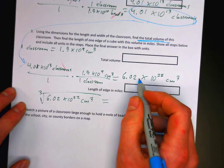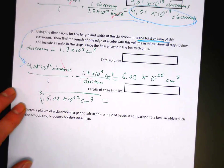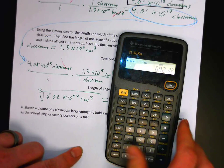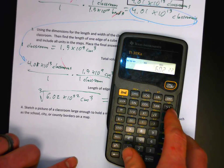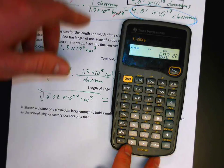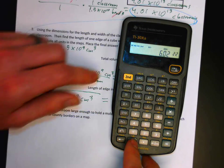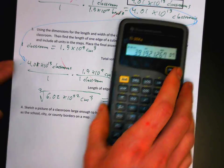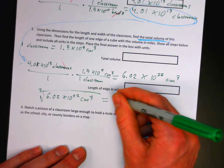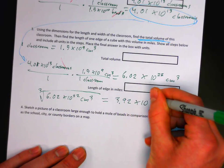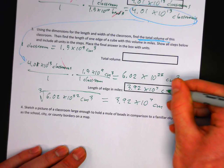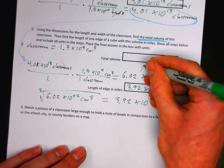So we take the cube root of this number. You might need to look for that button on your calculator — on my calculator you press the second key and use this button, or there's a designated cube root key. The cube root of 6.02 times 10 to the 22nd centimeters cubed comes out to 3.92 times 10 to the 7th centimeters. That's the number that goes in this box — 3.92 times 10 to the 7th centimeters.